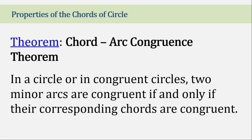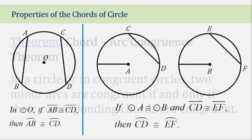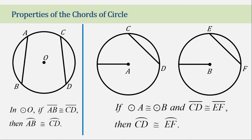Another theorem to consider is the Chord-Arc Congruence Theorem. In a circle or in congruent circles, two minor arcs are congruent if and only if their corresponding chords are congruent. In circle O, if chord AB is congruent to chord CD, then arc AB and arc CD are congruent as well. If two circles have the same radius, they are congruent, and if chord CD is congruent to chord EF, then arc CD is congruent to arc EF.